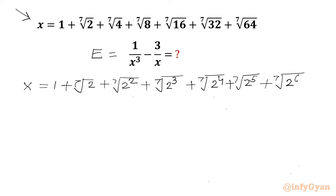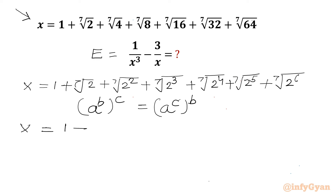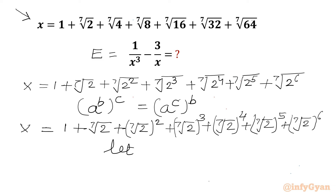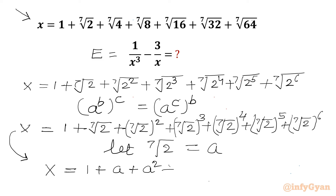Now I will use one exponential property: a^b whole power c can be written as a^c whole power b. Let's swap the powers. So x can be written as 1 plus (⁷√2) plus (⁷√2)² plus (⁷√2)³ plus (⁷√2)⁴ plus (⁷√2)⁵ plus (⁷√2)⁶. Now let us assume the 7th root of 2 is equal to a. So we can write x as 1 plus a plus a² plus a³ plus a⁴ plus a⁵ plus a⁶.